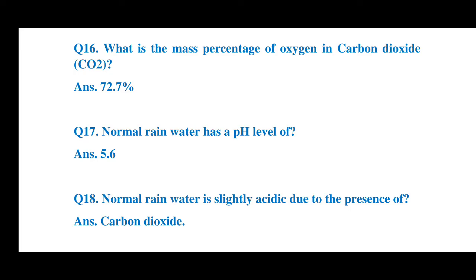Question 17: Normal rainwater has a pH level of 5.6. Question 18: Normal rainwater is slightly acidic due to the presence of carbon dioxide.